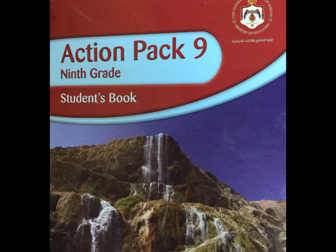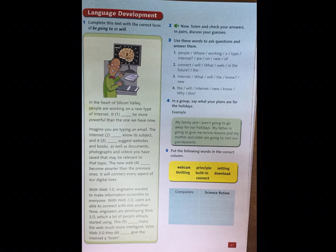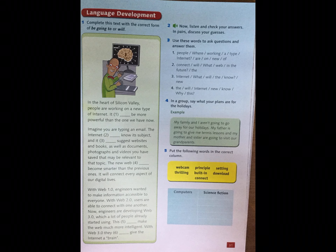So let's begin. Here we have: complete the text with the correct form of 'be going to' or 'will'. Now remember, 'be going to' is for future planning and the future simple 'will' is for predictions. We have four types. We have 'will' plus infinitive.